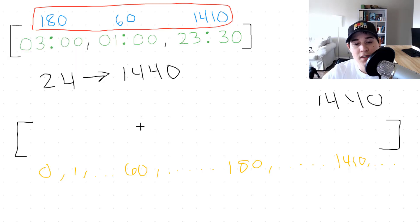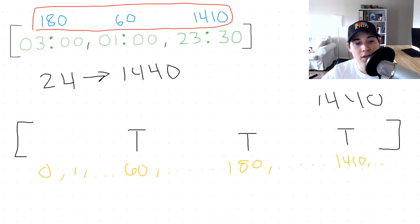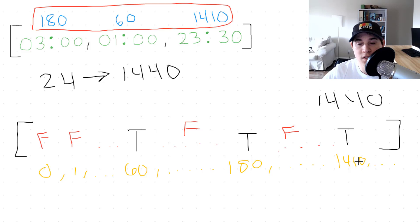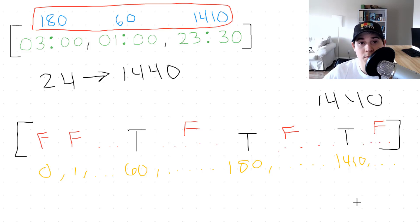All we need to do is map those indices to true. Every other index we didn't label as true would be false. So 0 through 60 would all be false, 60 to 180 would all be false, 180 to 1410 would be false, and then 1410 to 1440 are all false as well.